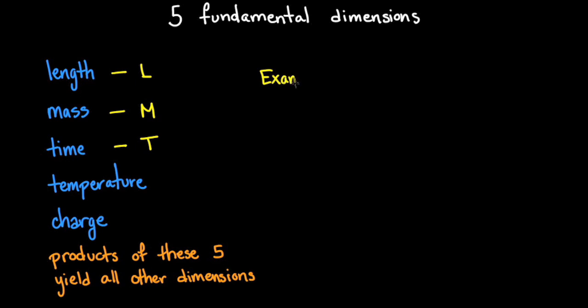For example, no matter how you measure the physical quantity velocity, it has the dimension, which we denote with square brackets, of length divided by time, or length times time to the negative one power.